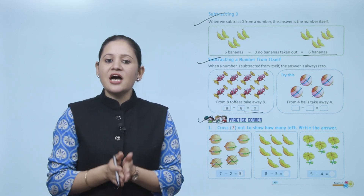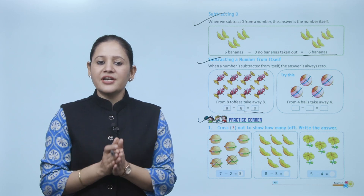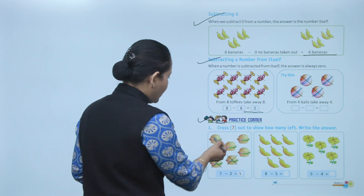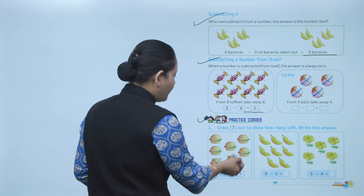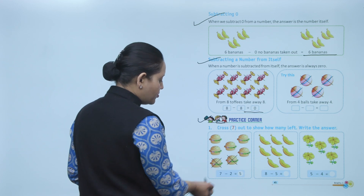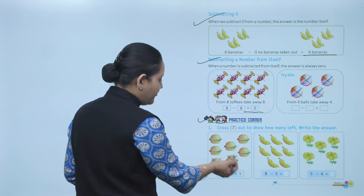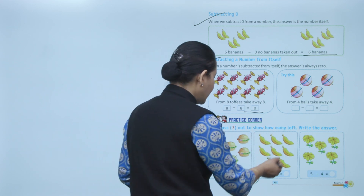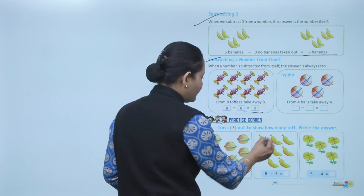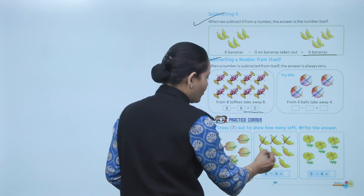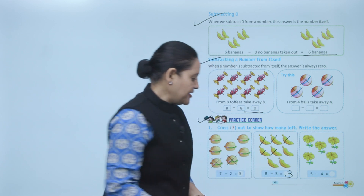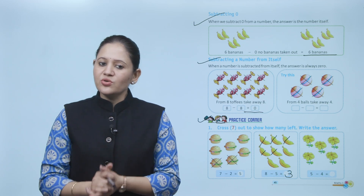Next, practice corner. Cross out to show how many are left and write the answer. Here, total burgers: 1, 2, 3, 4, 5, 6, 7. We have crossed out 2, so how many are left? 5. Next, total 8 bananas — 8 minus 5, so cross out 5 bananas: 1, 2, 3, 4, 5. How many are left? 3. So 8 minus 5 equals 3.